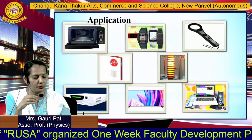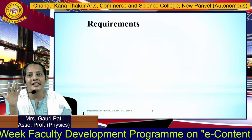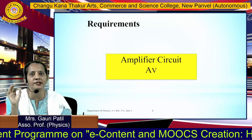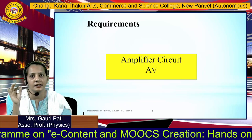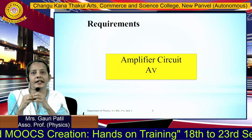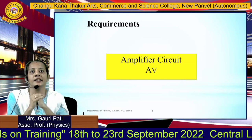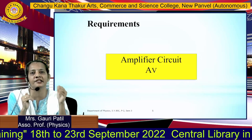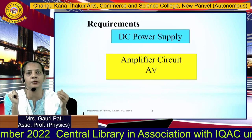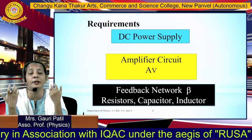Now, what is required to build an oscillator? It requires three units. The first unit is the amplifier circuit, which can be built using either a transistor or an op-amp. It has its own voltage gain represented by Av, where A is the gain and V represents voltage.